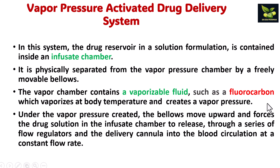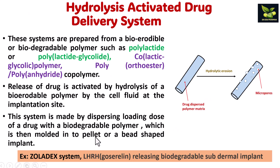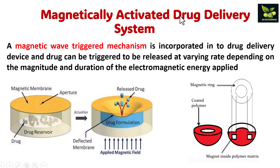Second is vapor pressure activated system. The vapor pressure chamber contains vaporizable fluids such as fluorocarbon, which vaporizes at body temperature and creates vapor pressure, causing the drug to be released. An example is the Infusate device. Next is hydrolysis activated drug delivery system. The mechanism is hydrolytic erosion. This system is prepared from bioerodible and biodegradable polymers such as polylactic acid, polyglycolic acid, or poly(lactide-co-glycolide), and the release is activated by hydrolysis of the bioerodible polymer by cell fluid at the implantation site. An example is the Zoladex system.